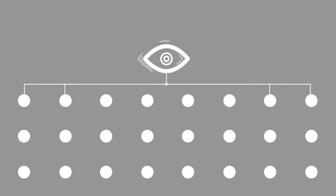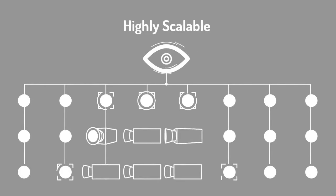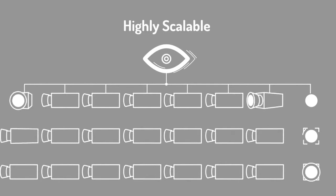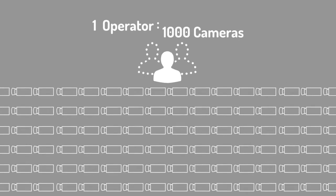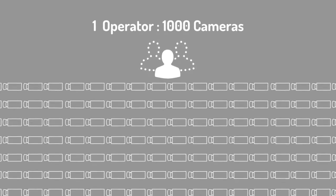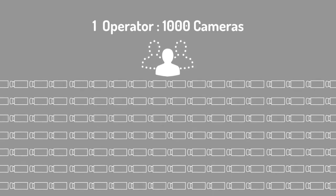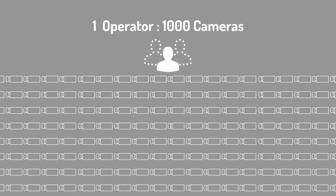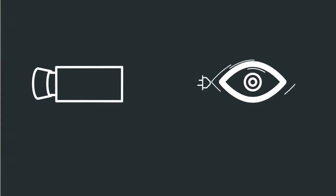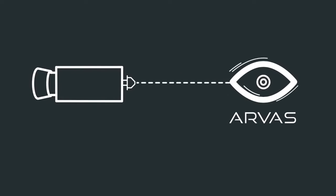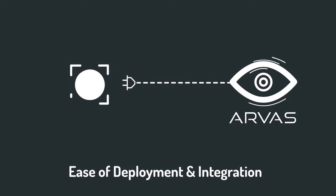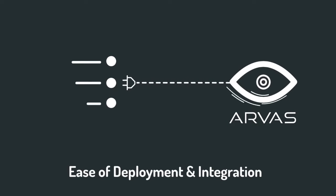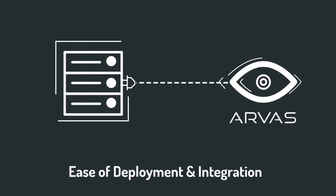ARVOS can be quickly set up for thousands of cameras and significantly reduces the time needed for full-scale deployment. As a result, fewer operators are needed to effectively monitor a large number of cameras, leading to high manpower reorganization for your company. It can be easily integrated with different video management systems and rule-based analytics, enhancing existing surveillance networks.